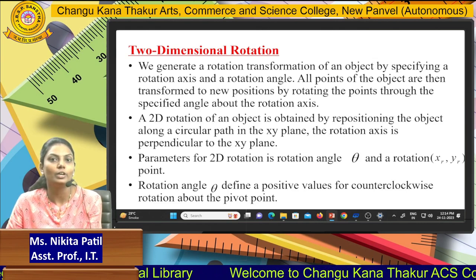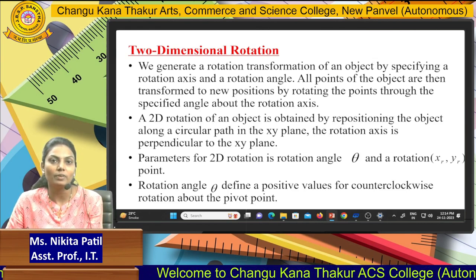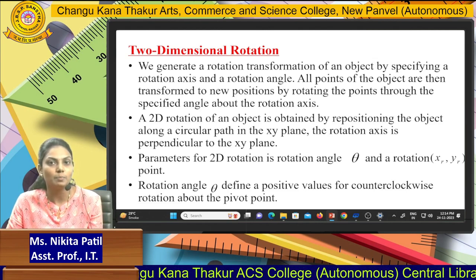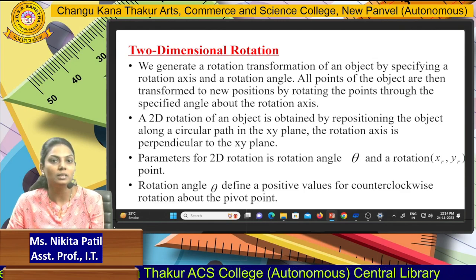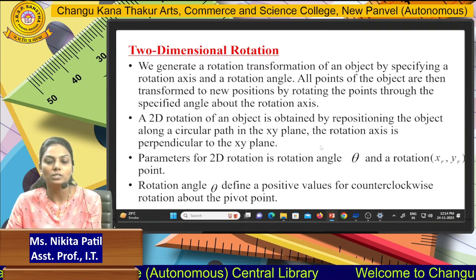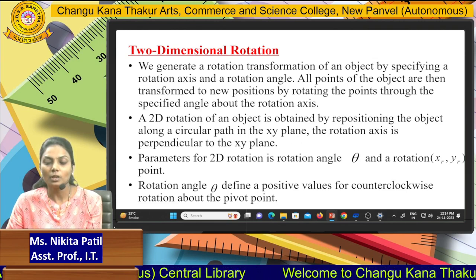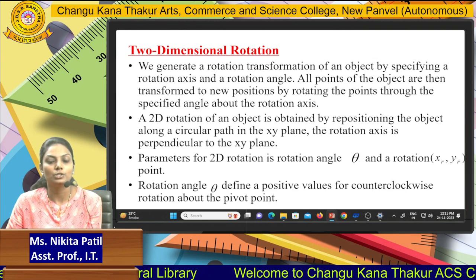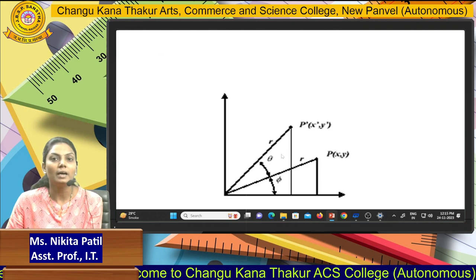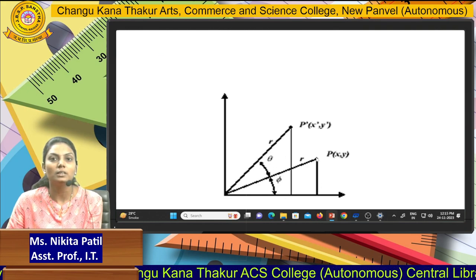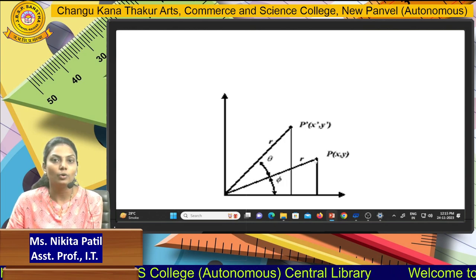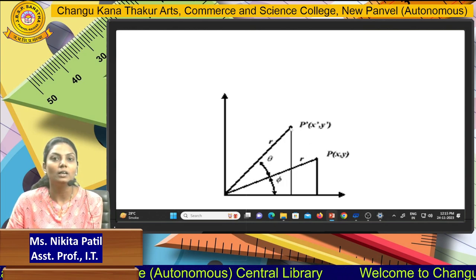There are two things for your rotation — the perpendicular axis plane and your basic theta, that is your angle. The rotational angle theta defines a positive value for counter-clockwise rotations about the pivot position. In the diagram, the angle theta represents point P on the x and y axis — the angle will be r. The newly created angle shows the perpendicular axis and the new angle theta which is rotated in your x and y axis.